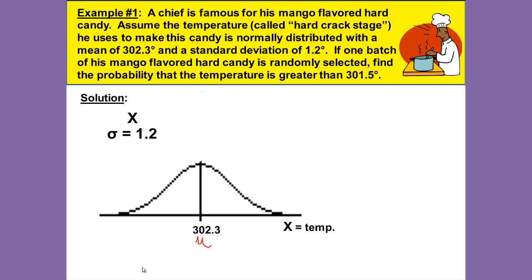Once we have the mean and the standard deviation labeled, we want to label the X. This problem wants us to find the probability that the temperature is greater than 301.5 degrees, so label 301.5 that would be below the 302. Since we want that greater than, we'll shade above the 301 and that would shade all the way to the right, so the answer we're looking for is the shaded area to the right.